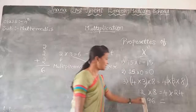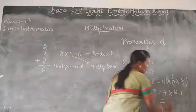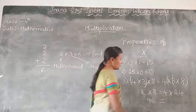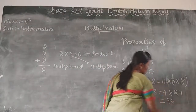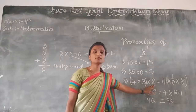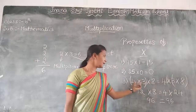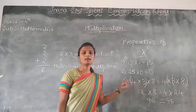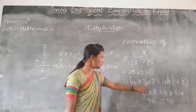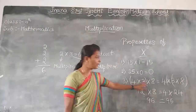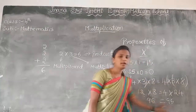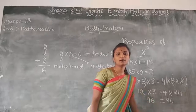Here, 4 into 3 into 8: if I couple the first two numbers, 4 into 3 is 12, and 12 into 8 is 96. If I couple the last two, 3 into 8 is 24, and 4 into 24 is also 96. The final product remains the same.